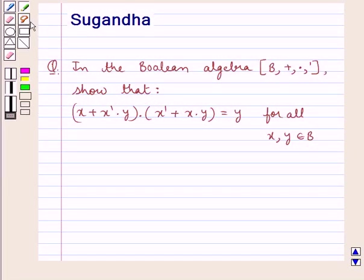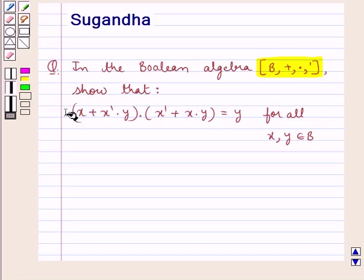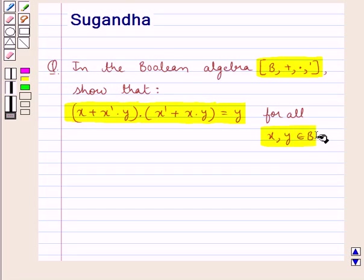Hello and welcome to the session. In this session we discuss the following question: In the Boolean Algebra consisting of the set B and operations sum, product and complement, show that (x + x'y)(x' + xy) = y for all x and y belonging to the set B.